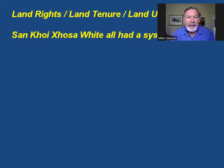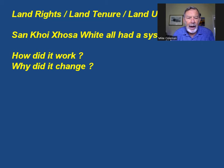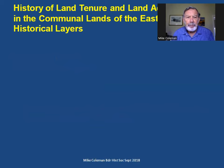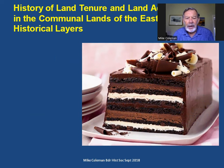The San, the Khoi, Xhosa, whites — all had a system. How did it work? Why did it change? And what do we do about it now? All of this sits in the context of South African law, which is a unique historical blend of customary law, Roman Dutch law, and English law. This is the history of land tenure and land administration on the communal land of the Eastern Cape, presented as historical layers.